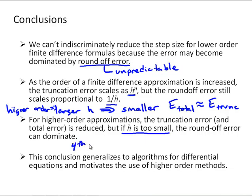The truncation error and total error is reduced for higher order approximations, but we still have to be careful because if h is too small, the round-off error can dominate. For the fourth order method, we want h to be greater than or equal to 0.001, or 1 times 10 to the minus 3. This conclusion generalizes to algorithms for differential equations and motivates the use of higher order methods. This is one of the reasons why we aren't just going to use a first order difference approximation — it's the simplest, but it runs into this round-off error problem. Using higher order difference approximations, you have more accurate results and are more computationally efficient.